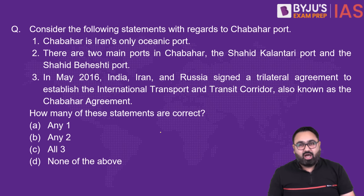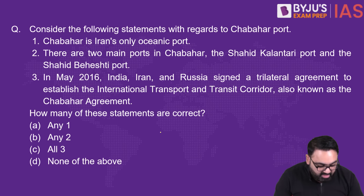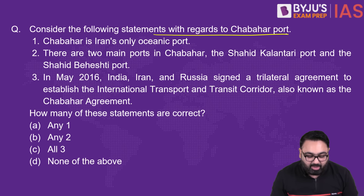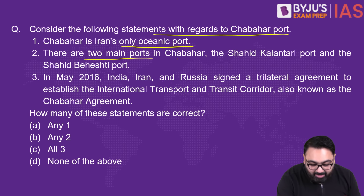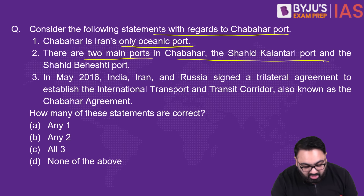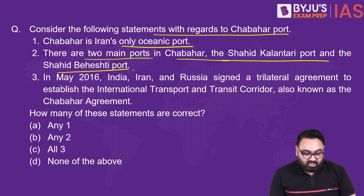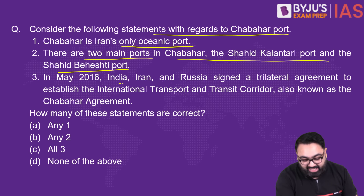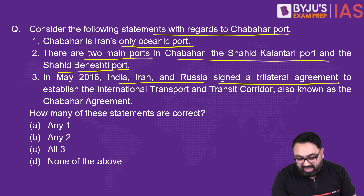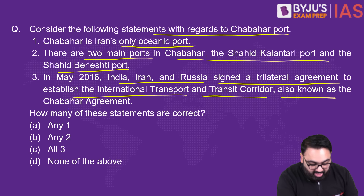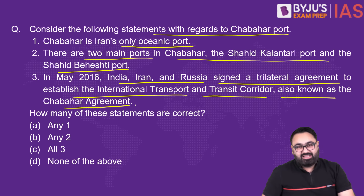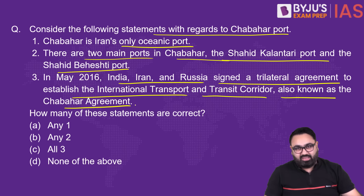The first question is on the Chabahar port, which was in the news. Consider the following statements with regard to Chabahar port. Number one: it is Iran's only oceanic port. Number two: there are two main ports in Chabahar — the Shahid Kalantri port and the Shahid Beheshti port. Number three: in May 2016, India, Iran and Russia signed a trilateral agreement to establish the international transport and transit corridor, also known as the Chabahar agreement. How many of these statements are correct?